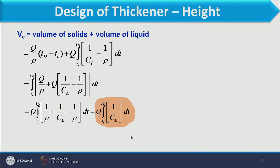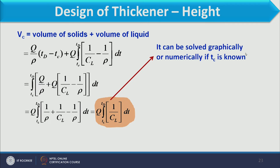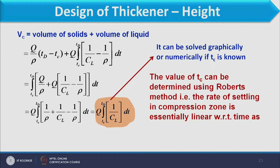This equation can be solved graphically or numerically if Tc is known. The Td value can be calculated because the final concentration is known, but Tc is unknown. Tc will be calculated by the method proposed by Roberts, which shows that the rate of settling in the compression zone is essentially linear with respect to time.